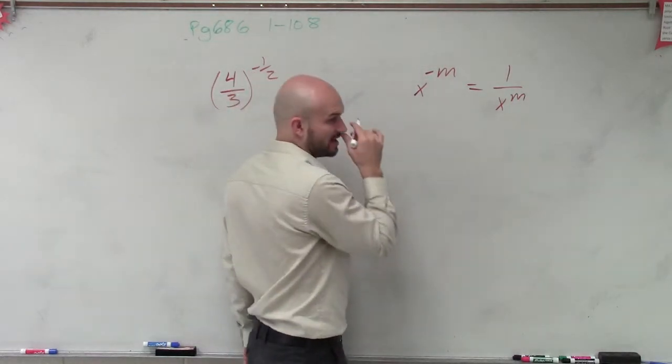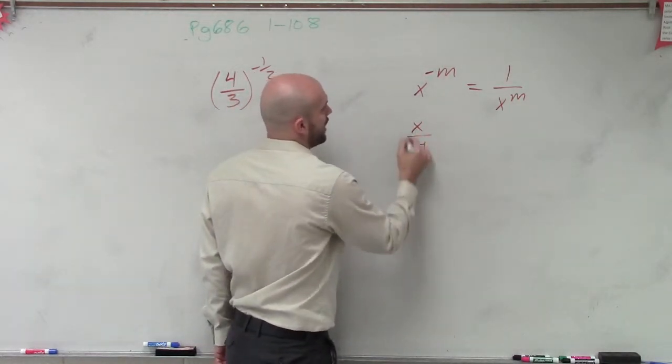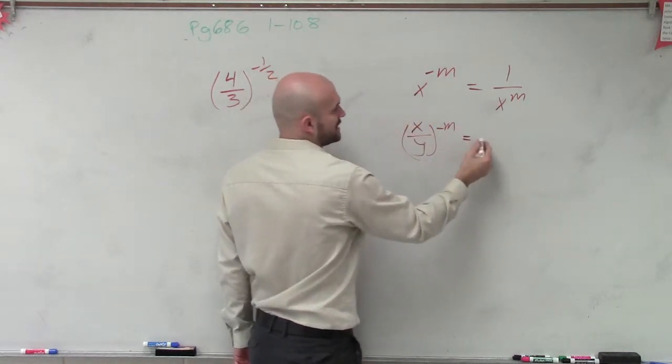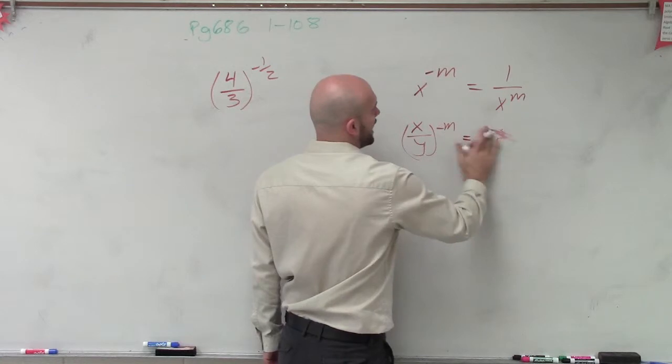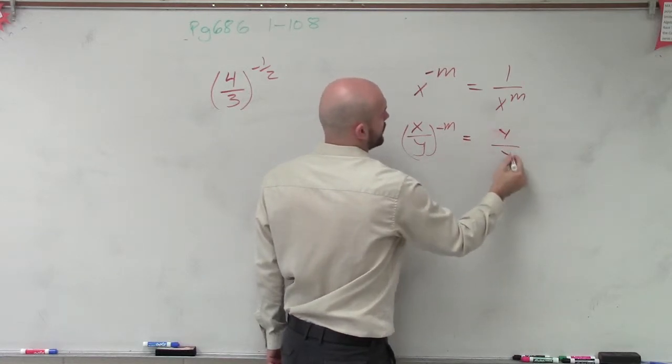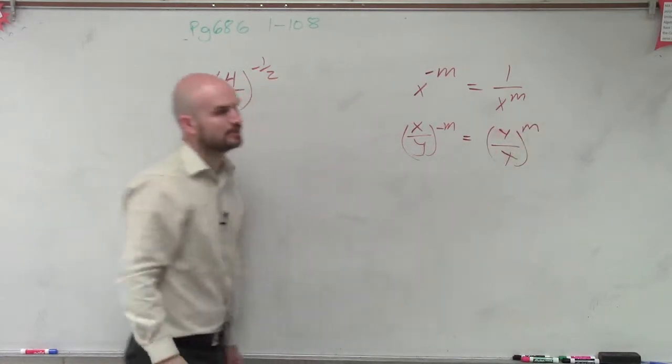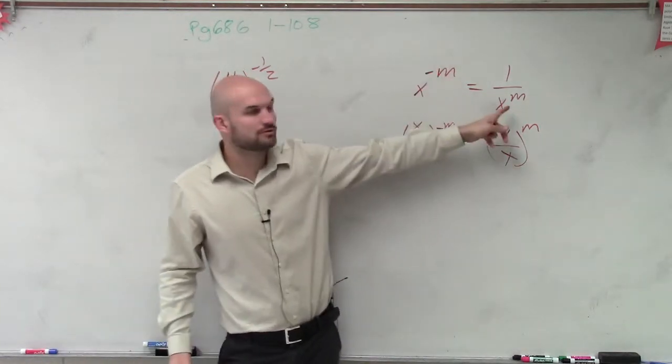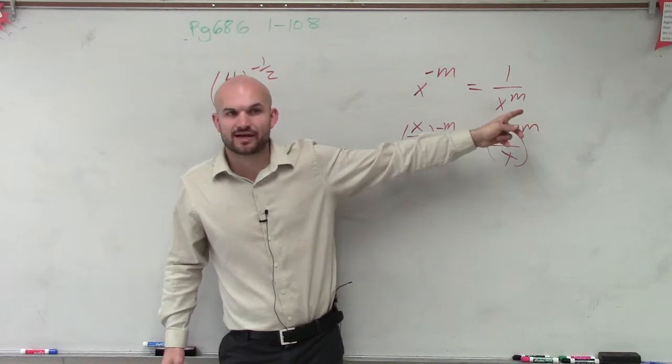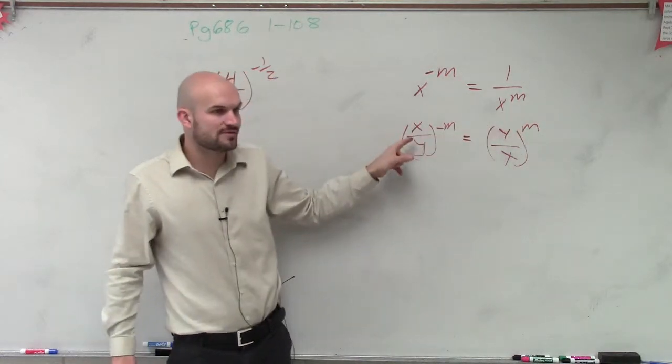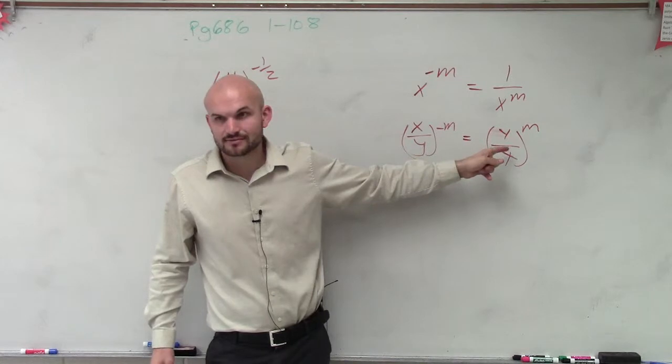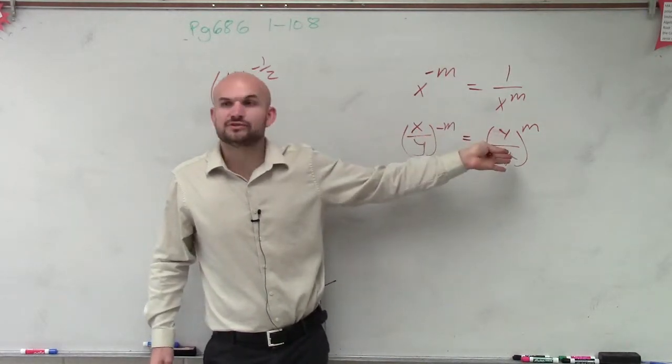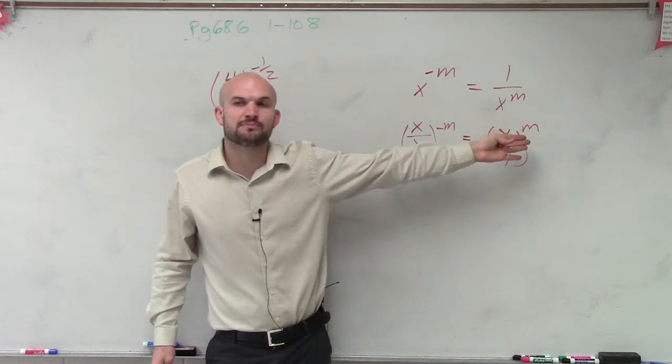All right. The other thing that also kind of works out: if you have x over y raised to the negative m, that is going to be simply equal to the reciprocal of y over x raised to the m. Because remember, you take the reciprocal. x raised to the negative m equals the reciprocal of that to the positive value. So therefore, what's the reciprocal of x over y? y over x. Okay? So if you have a fraction, you need to make sure that you take the reciprocal of it, and then you can put it to the positive power.